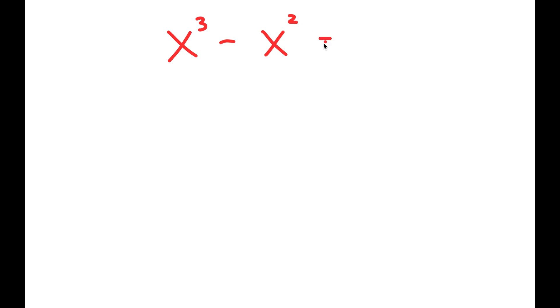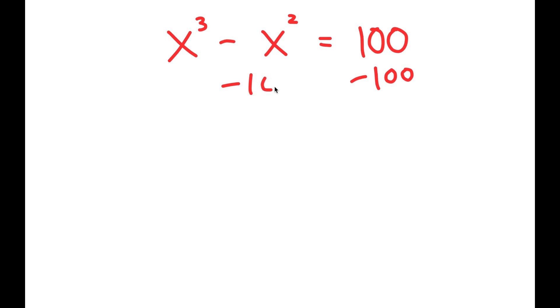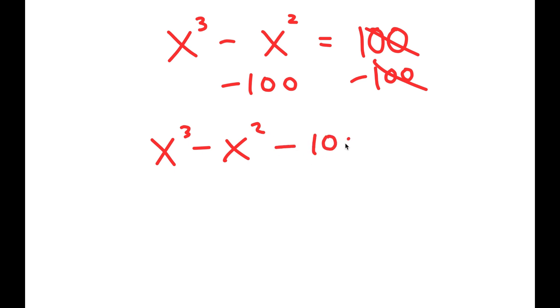In this video, I'm going to solve the equation x to the power of 3 minus x squared is equal to 100. So to solve this, I'm going to first start by subtracting 100 on both sides. So then these two cancel out, and I get x to the power of 3 minus x squared minus 100 is equal to 0.